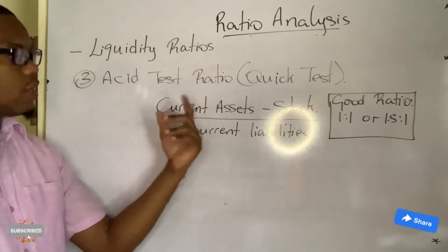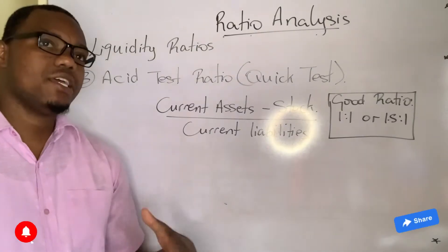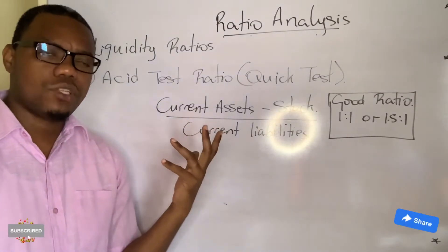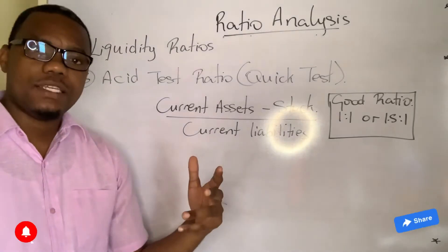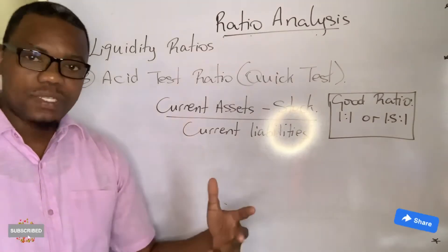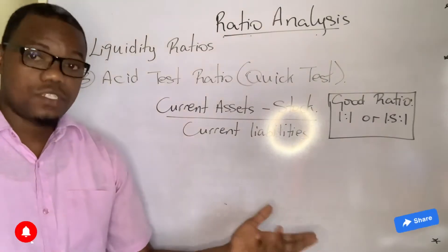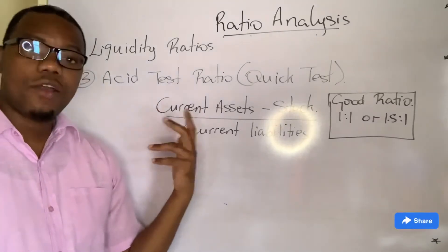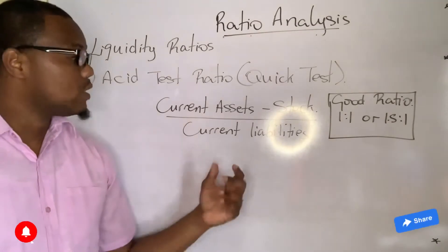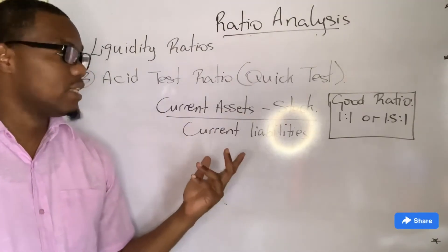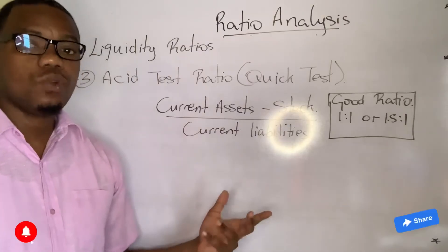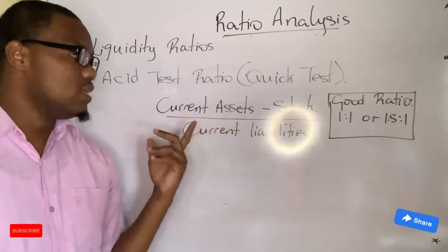The next liquidity ratio is the acid test ratio, also called the quick test ratio. Note that the current ratio is also called the working capital ratio. The acid test ratio is really the current ratio but faster. Think of it like COVID-19 tests — there was the PCR test and the rapid test, which is much faster. The acid test ratio tests the business's ability to cover current liabilities in case of bankruptcy, just like the current ratio, but it excludes one current asset — stock — which makes it faster.